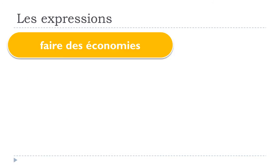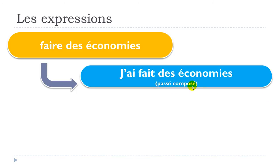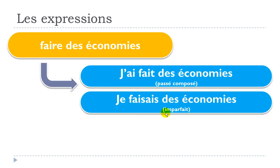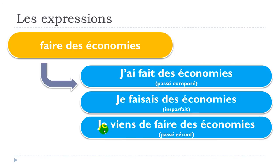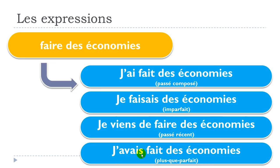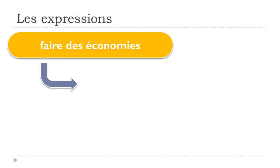Now let's see how faire des économies works in the past tenses. In the passé composé: j'ai fait des économies. In the imparfait: je faisais des économies. In the passé récent: je viens de faire des économies. And in the plus-que-parfait: j'avais fait des économies.